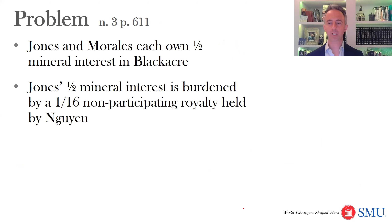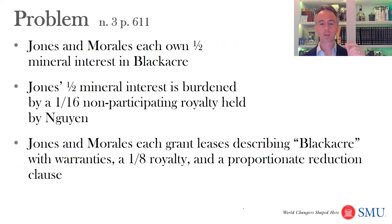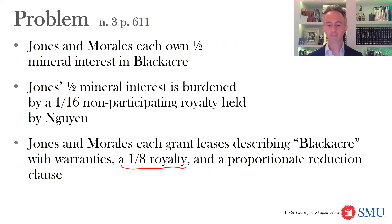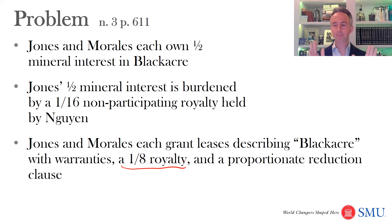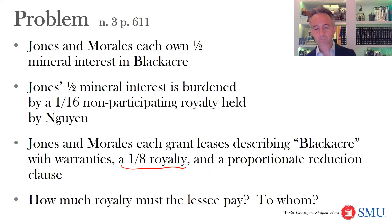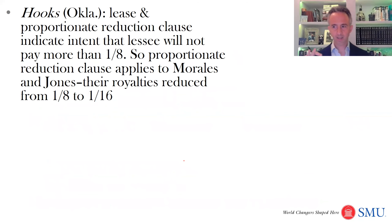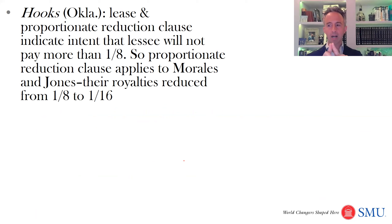Consider this circumstance: Jones and Morales each own one-half of the mineral interest in Blackacre, but Jones's half mineral interest is burdened by a one-sixteenth non-participating royalty held by Win. Jones and Morales each grant leases describing Blackacre overall — not just their one-half interest — with a regular one-eighth royalty and a proportionate reduction clause. The proportionate reduction clause means each of them just gets their share of the well, so each is going to get one-sixteenth.